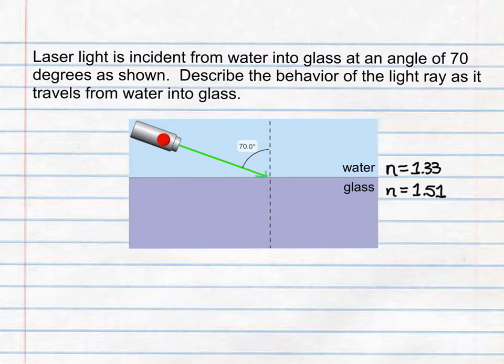As we can look these values up, the index of refraction for water is about 1.33 and the index of refraction for glass is about 1.51.